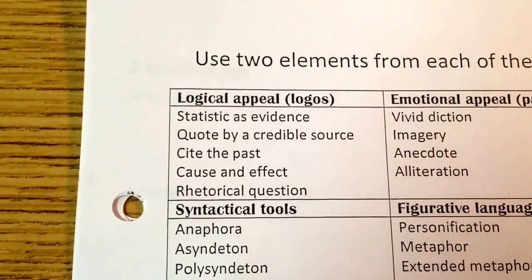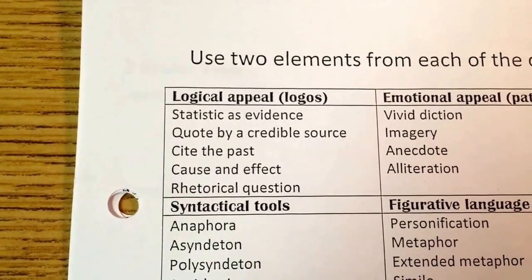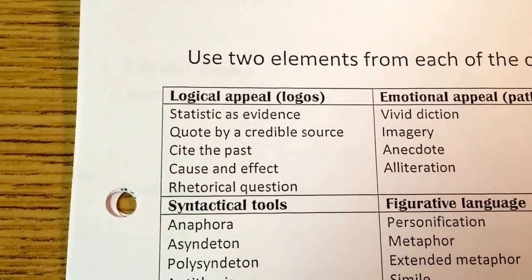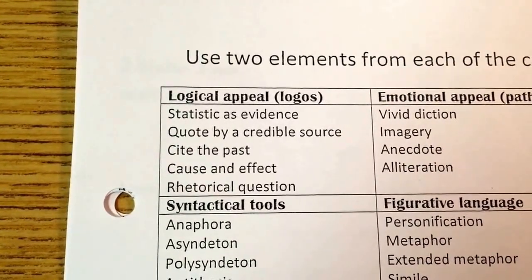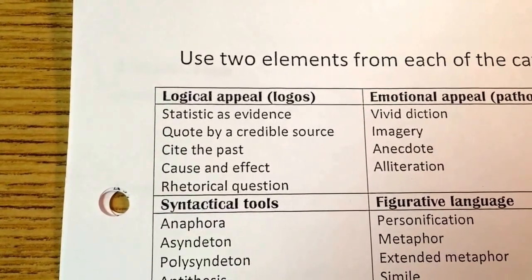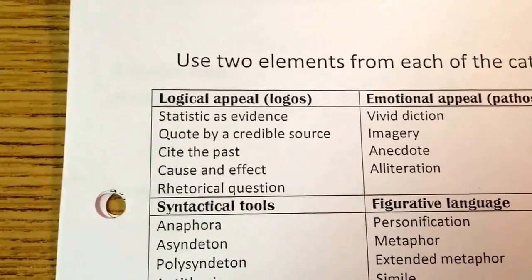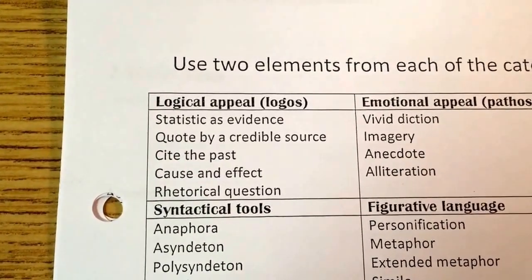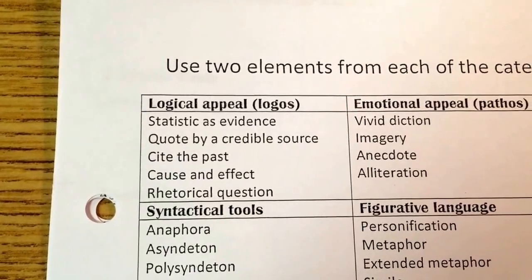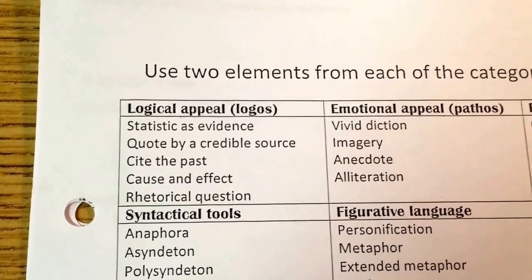The first category is logical appeal — you have to add two of these elements. You need to add either a statistic as evidence, a quote by a credible source that will help substantiate your argument, cite the past, give an example of cause and effect, or write a rhetorical question. Just two of those.